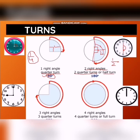Our movement is a half turn. At 30 minutes, the minute hand makes a half turn of the clock. This makes an angle of 180 degrees.